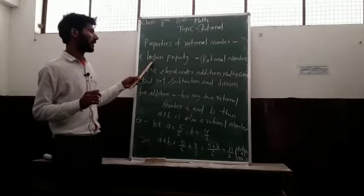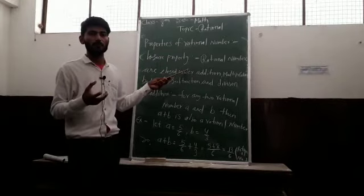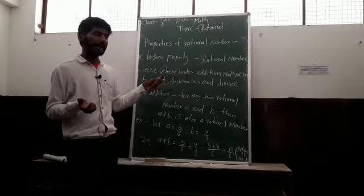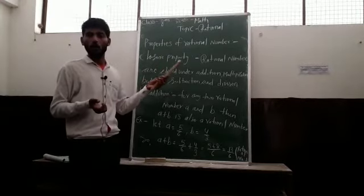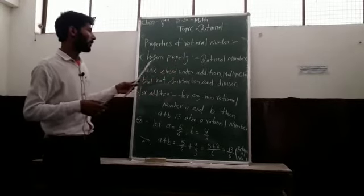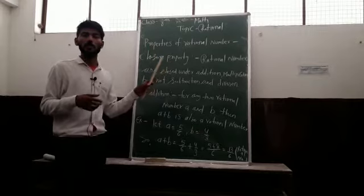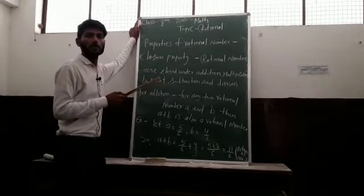...will also be a rational number. If we take two rational numbers a and b and find their sum or product, we always get a rational number again. For any two rational numbers, the sum and product are again rational numbers.